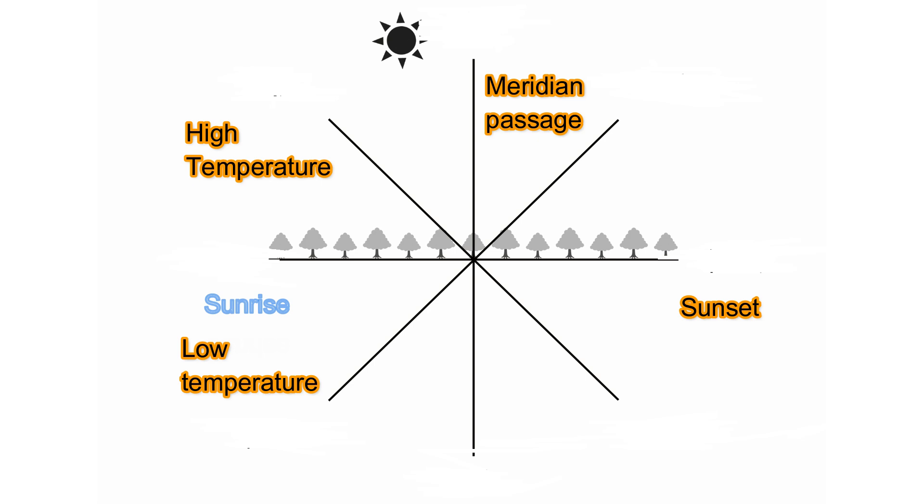The horizontal line connects the sunrise and sunset and symbolizes the Earth. The vertical line symbolizes meridian passage and symbolizes the sunlight. This is a kind of ancient sundial, dividing a day into four zones.